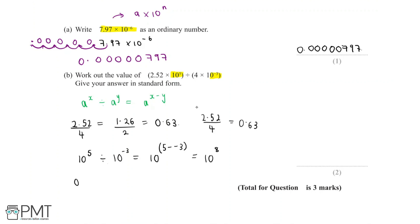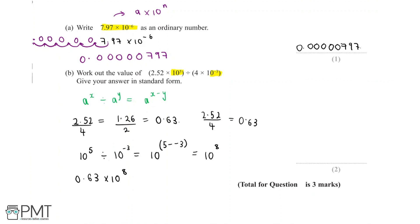So we're left with 0.63 × 10^8. A common mistake is to write the answer as 0.63 × 10^8, but this isn't quite right. When we spoke about standard form at the beginning, we said a has to be between 1 and 10. 0.63 is less than 1, so we need to make this number between 1 and 10.